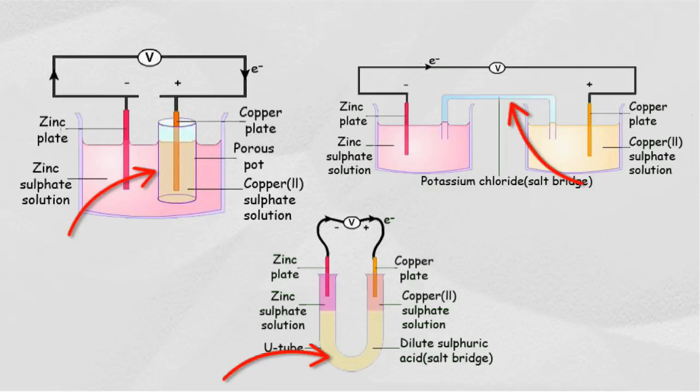The function is to separate two electrolyte solutions but allow ions to pass through to complete a circuit. A salt bridge can be made from any electrolyte that does not react with the electrodes in Daniel cell, such as dilute sulfuric acid, sodium nitrate solution, and potassium chloride solution.